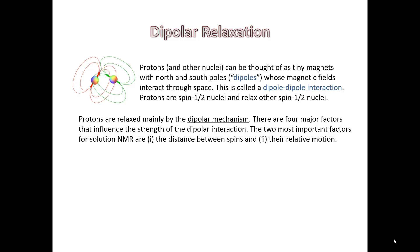Let's talk about relaxation mechanisms when doing proton and carbon NMR. Protons and other nuclei can be thought of as tiny magnets with north and south poles called dipoles, and their magnetic fields interact through space. This is called a dipole-dipole interaction. Protons and carbons are both spin one-half nuclei and help to relax other spin one-half nuclei. While protons are mainly relaxed by the dipolar mechanism, we want to know what influences this.